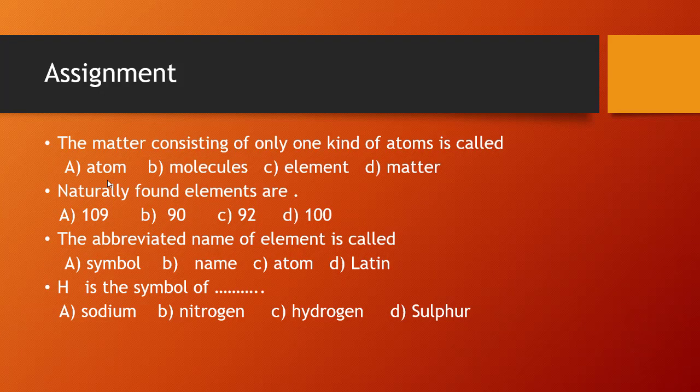The abbreviated name of an element is called — Option A symbol, Option B name, Option C atom, Option D Latin. The correct answer is Option A, symbol. The next MCQ: H is a symbol of — the correct answer is hydrogen, Option C.